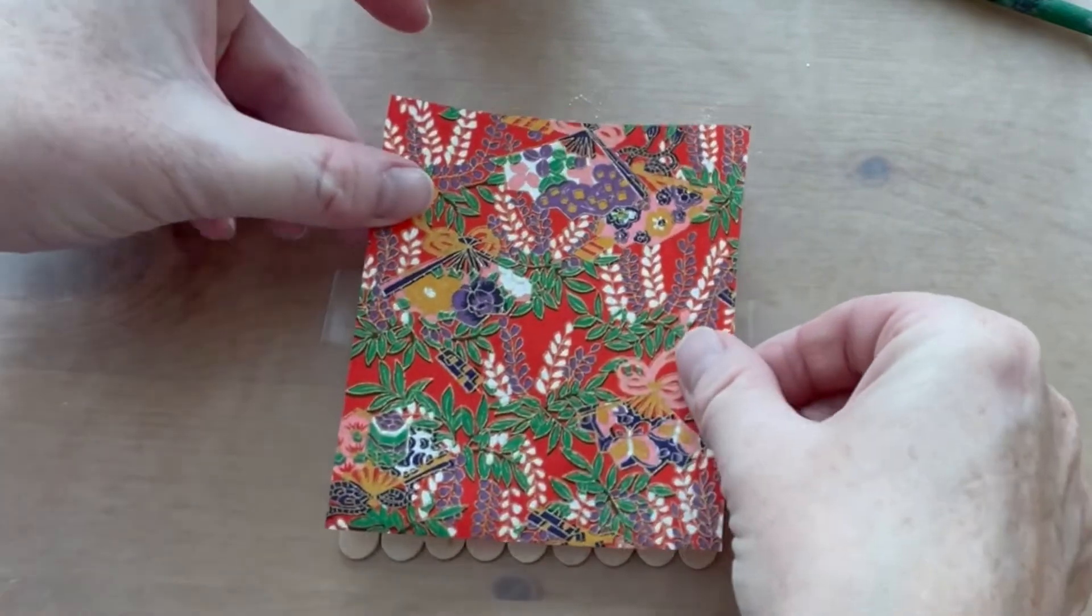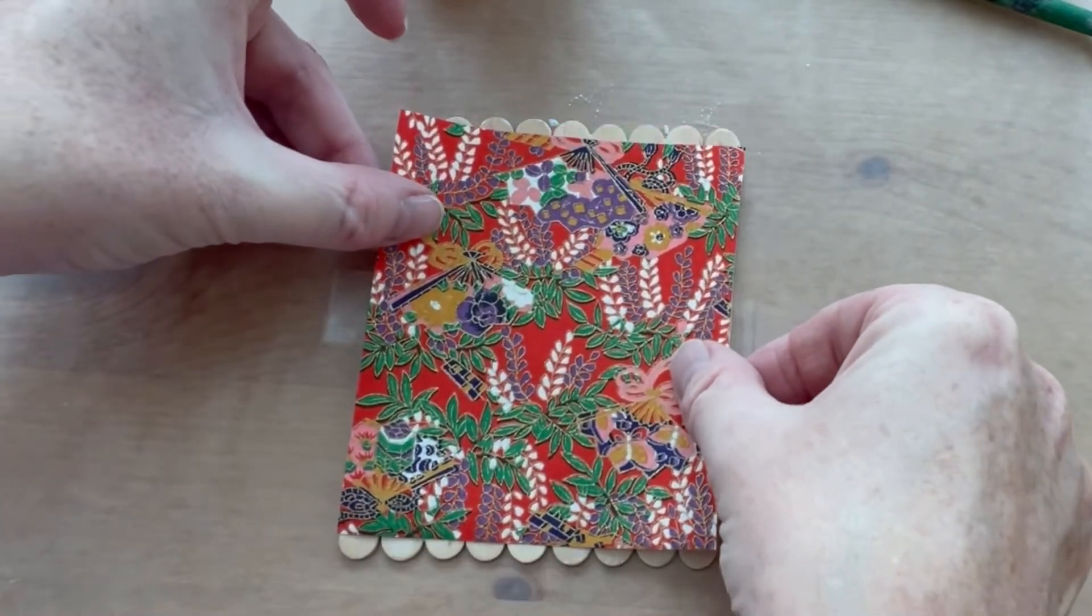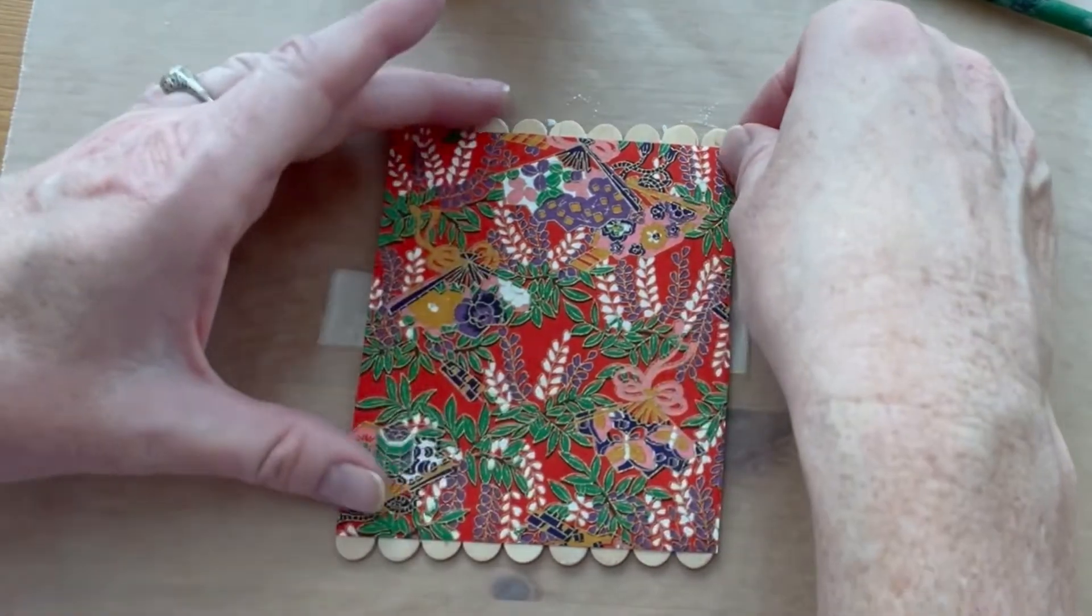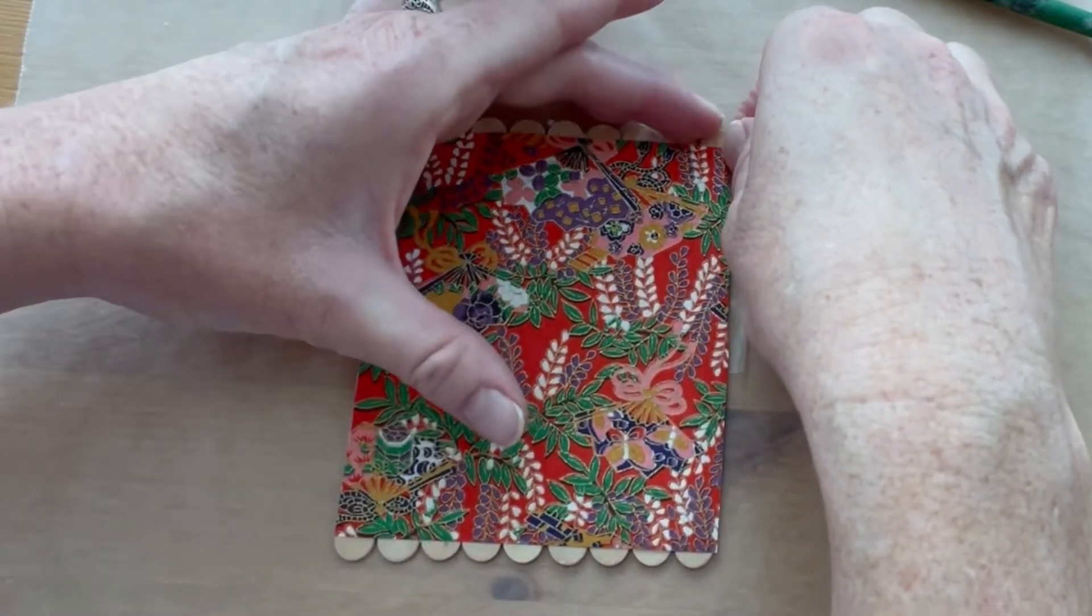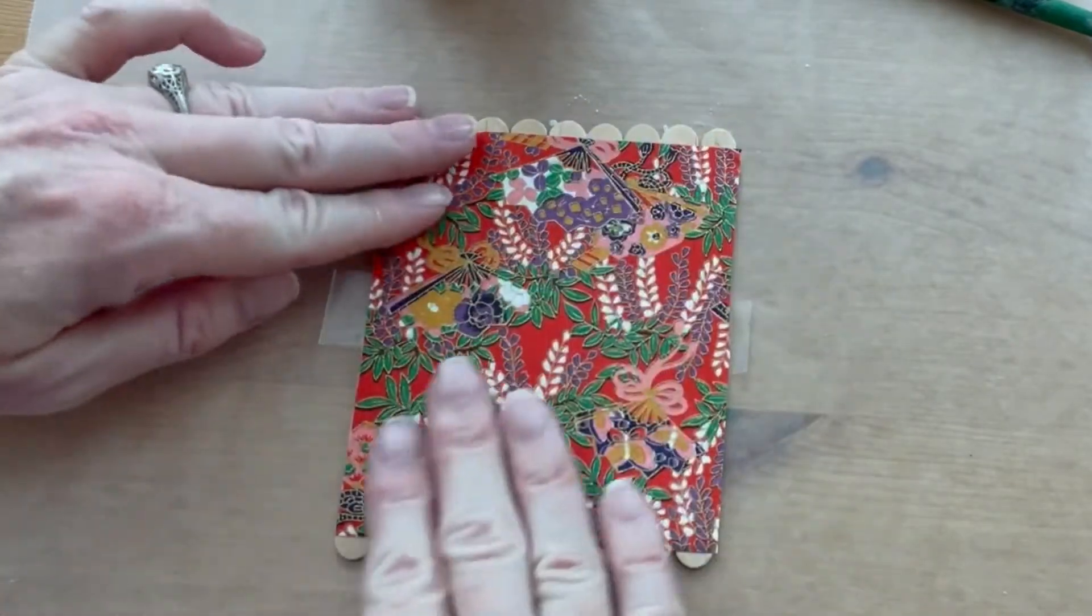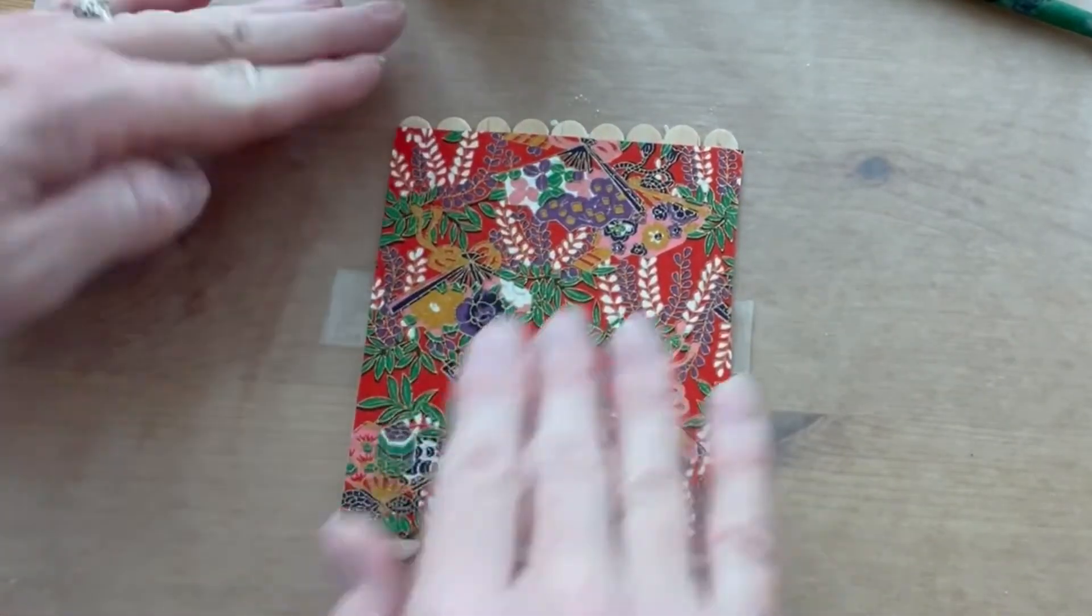Stick the paper onto the mod podge surface, right side up. Before you stick it completely down, make sure that you've got it perfectly centered on the sticks. Rub the paper to release any air bubbles and to make sure it's thoroughly stuck down to the wood.